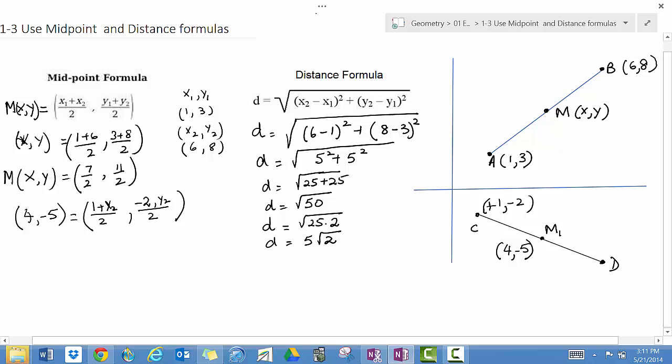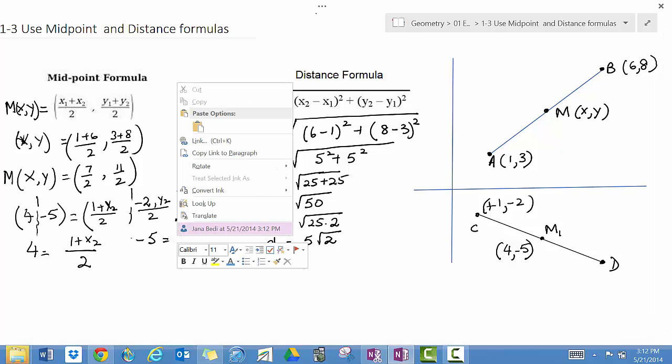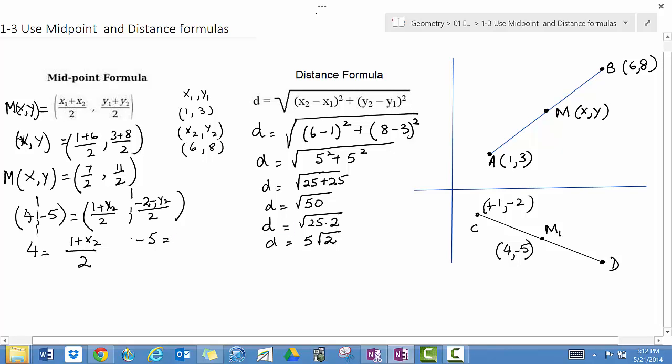It would seem that we have one equation with two unknowns, but we can actually split this equation. So 4 equals (1 + x₂)/2, and -5 equals (-2 + y₂)/2. Cross multiply: 8 equals 1 + x₂, so x₂ equals 7.